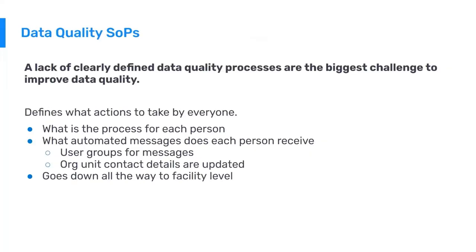Saving the best for last — the most important best practice for addressing data quality issues is having clearly defined data quality standard operating procedures. We've seen that in many countries that lack clearly defined data quality processes, they struggle with addressing data quality issues. We should not measure ourselves only on whether we can stop issues at the source, but more importantly, can we find them in a timely way and fix them before they start to be factored into our national statistics?